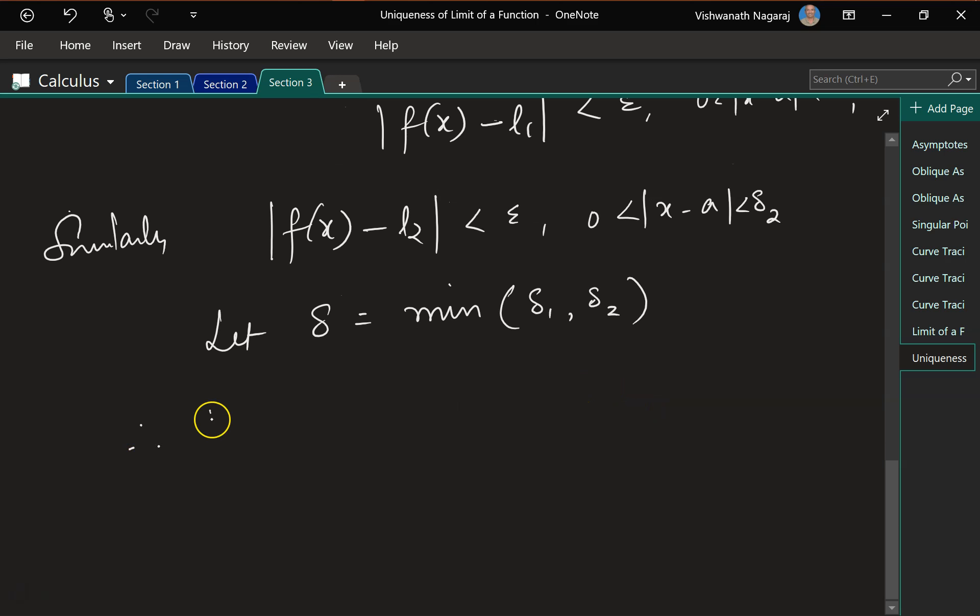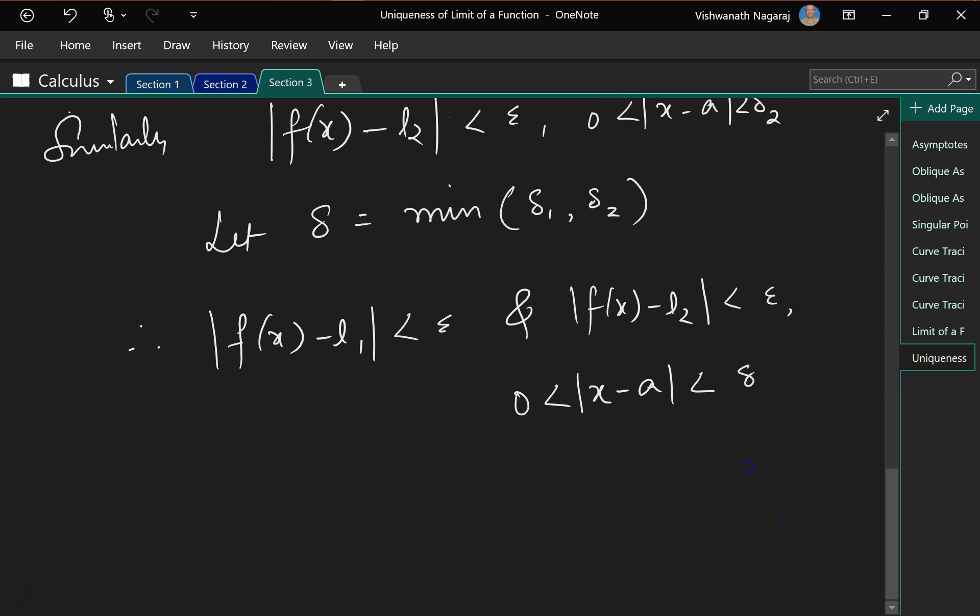So which means that f of x minus l1 is less than epsilon, and f of x minus l2 is less than epsilon, the distance between x and a is between 0 and delta. So instead of delta 1 and delta 2, now we can say delta itself.